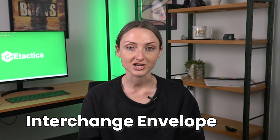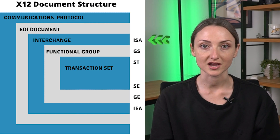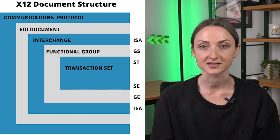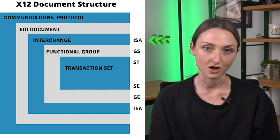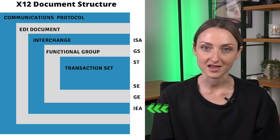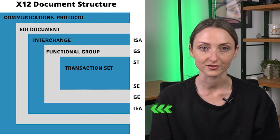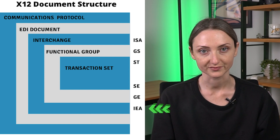Let's go over the overall structure of this format. The interchange envelope includes all the data being sent. It starts with a segment called ISA, which holds the sender and receiver information along with the time and date of transmission. The IEA segment at the end closes the envelope and includes control numbers to ensure everything lines up correctly. This outer layer ensures the message is securely sent and received as a complete package.